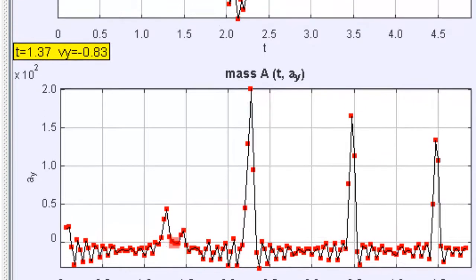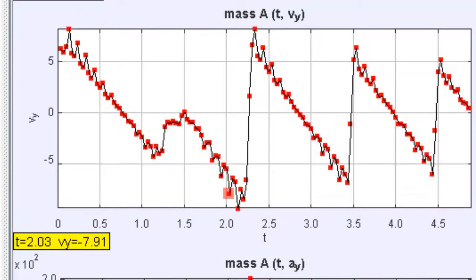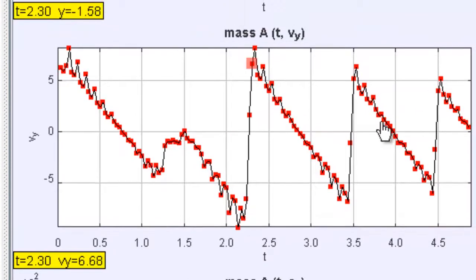But behind this fluctuation from the ay graph, you need to actually look at the vy—the vy graph—to look at the gradient to determine the acceleration.